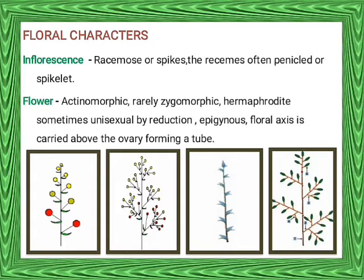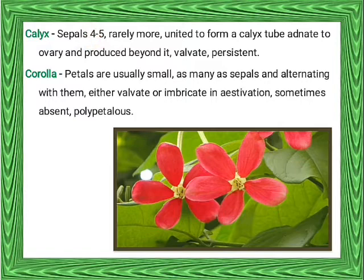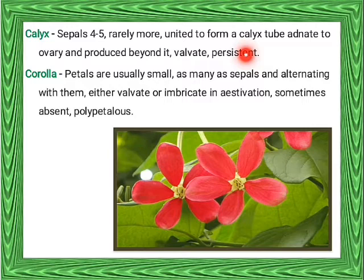Flowers: actinomorphic, meaning regular flowers are present, rarely zygomorphic meaning asymmetrical. Flowers are hermaphrodite, meaning bisexual; sometimes unisexual by reduction of floral parts. Epigynous, meaning inferior ovary is present. The floral axis is carried above the ovary forming a tube. Calyx consists of 4 to 5 sepals, rarely more, united to form a calyx tube which is adnate to the ovary and produced beyond it — valvate aestivation and persistent.